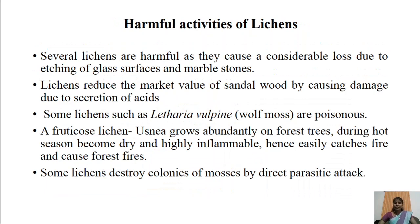Coming to harmful aspects of lichens. Several lichens are harmful as they cause considerable loss due to etching of glass surfaces and marble stones. Lichens, due to production of lichenic acid, reduce the market value of sandalwood by causing damage. Some lichens, such as Letharia vulpina, commonly called wolf moss, are poisonous. A fruticose lichen called Usnea grows abundantly on forest trees and during dry seasons becomes highly inflammable, easily catching fire and causing forest fires that can destroy entire forests.